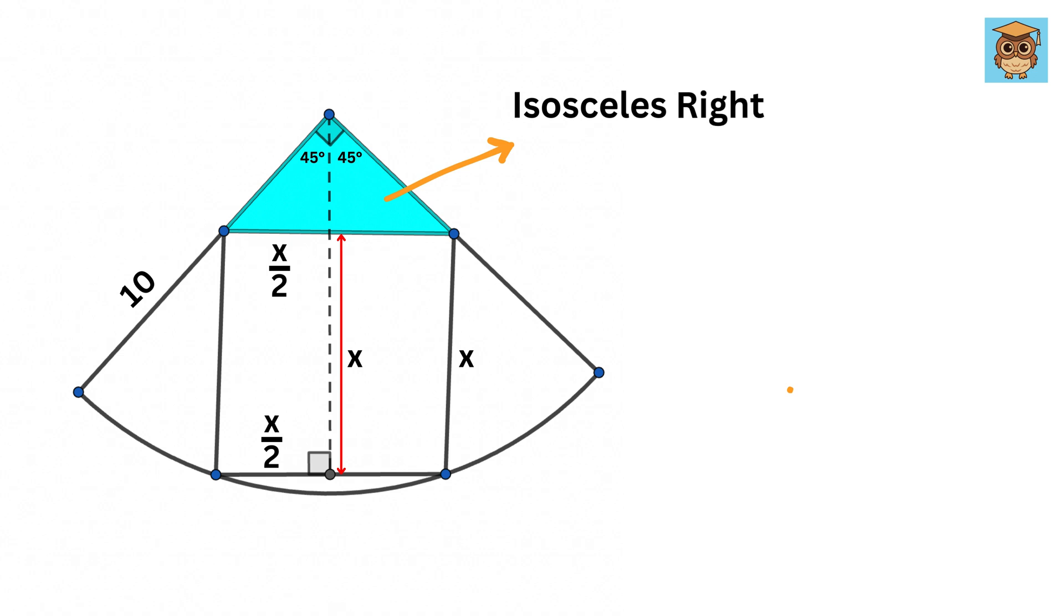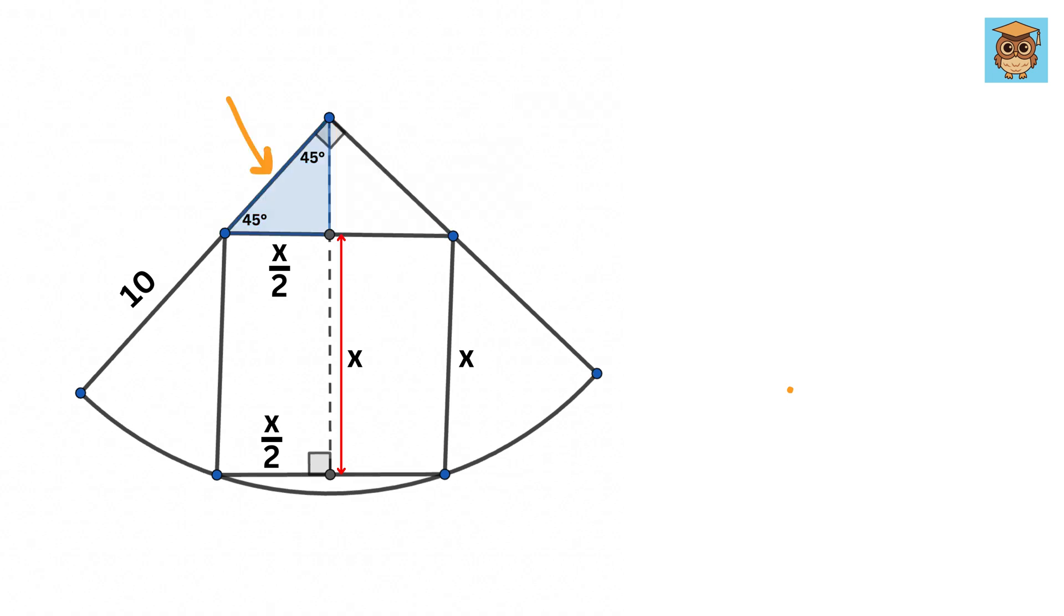So this will be an isosceles right triangle, which means all of these angles will be 45 degrees. Now consider this part. Both angles are equal, therefore this side will also be equal to X over 2.